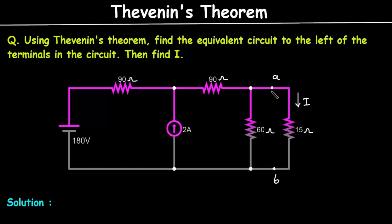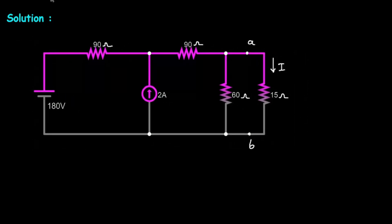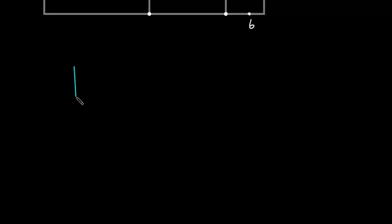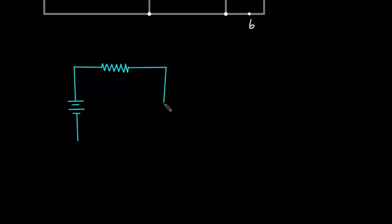In this circuit, first of all, we have to find Thevenin's equivalent circuit, and then we have to find the value of I. For Thevenin's equivalent circuit, there will be a Thevenin's voltage source connected in series with Thevenin's resistor, and then it is connected to load resistor RL.